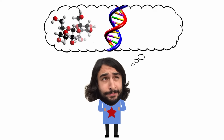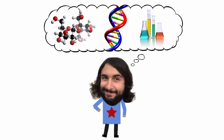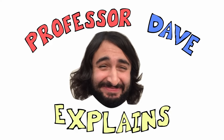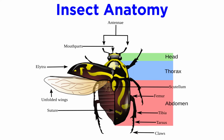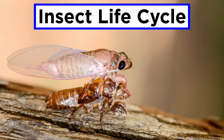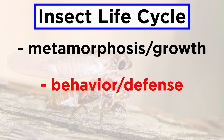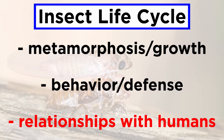Professor Dave Explains. In the previous tutorial we examined the external and internal anatomy of insects. Now let's continue by looking at life cycle, including metamorphosis and growth, behavior and defense, and finally relationships with humans.